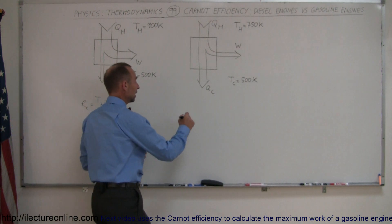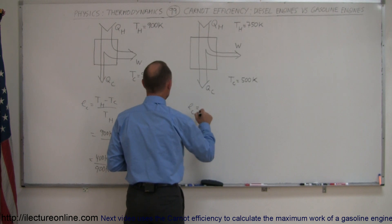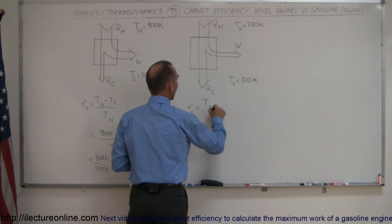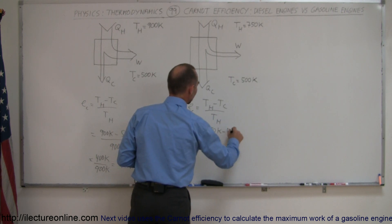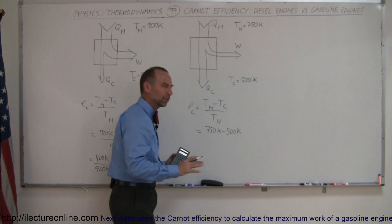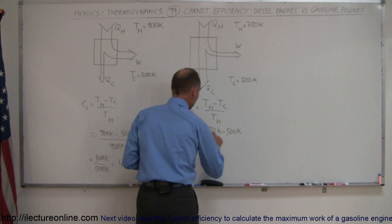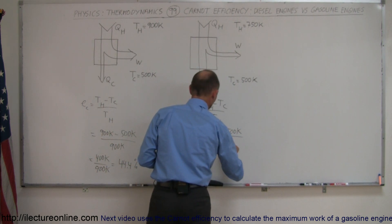For the gasoline engine, the efficiency for the Carnot engine would be T hot minus T cold, divided by T hot. In this case, T hot is 750 K minus 500 K. These are hypothetical numbers, just to give you a feel for that, divided by 750 K.